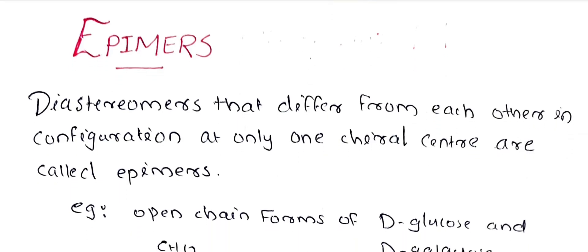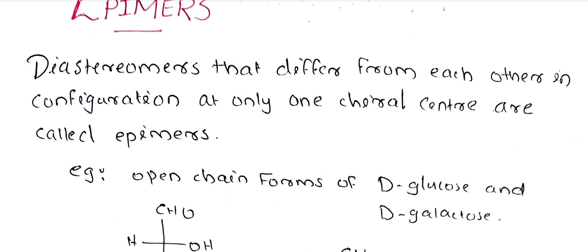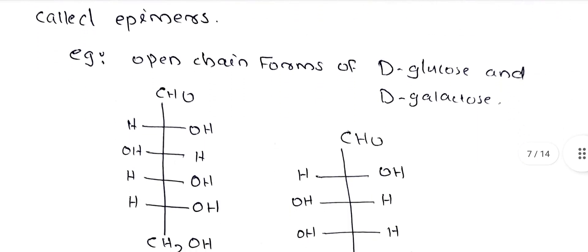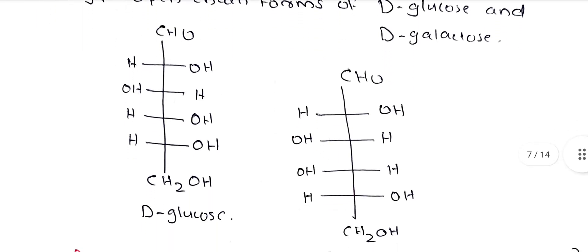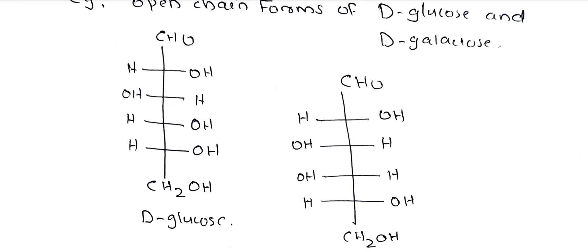Epimers: Diastereomers that differ from each other in the configuration at only one chiral center are called Epimers. For example, D-Glucose and D-Galactose are diastereomers. They differ at one chiral carbon — they have a different configuration at that one chiral carbon.